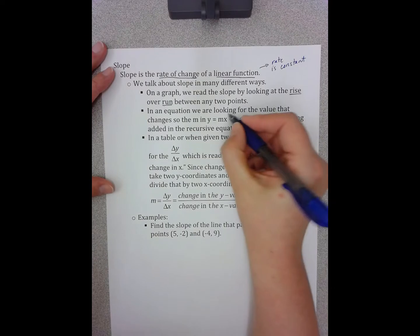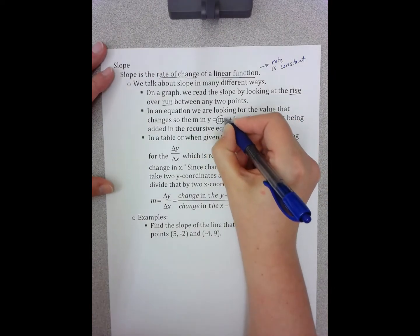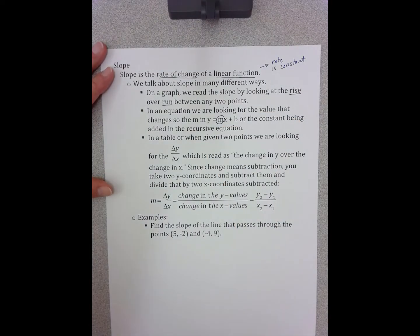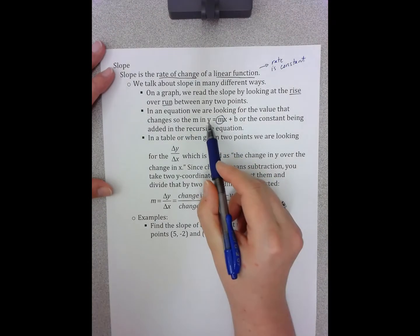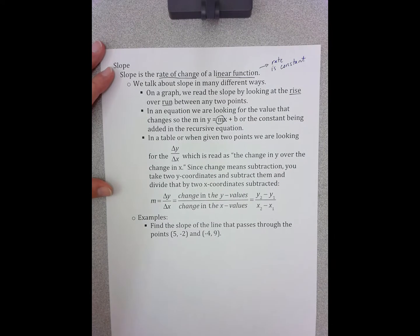In an equation, we see the slope as the m value, and obviously only when the equation is written in y equals mx plus b form.